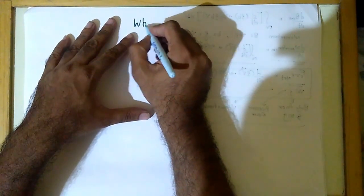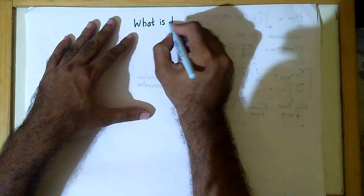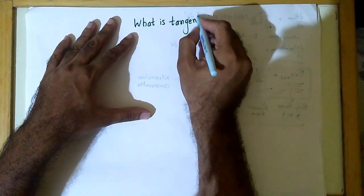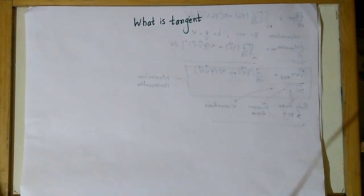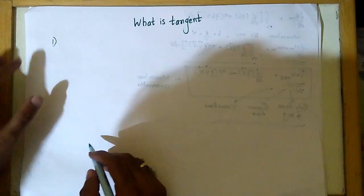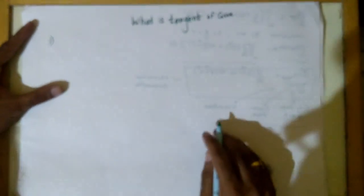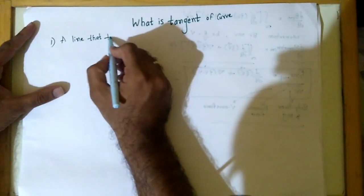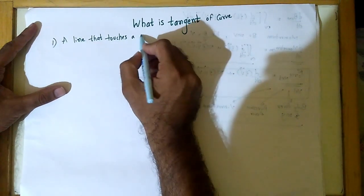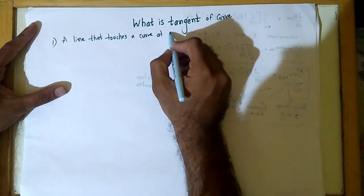What is a Tangent? When I ask this question to a science or engineering graduate, the first answer I get is: a tangent — let us say, what is a tangent of a curve, how do you find a tangent to a curve — they define a tangent as a line that touches a curve at one point.